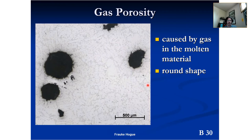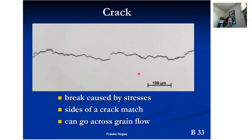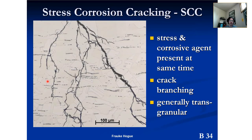Gas porosity: there is gas somehow in the material, typically characterized by a round shape because the gas formed a bubble trying to lower its energy. Shrinkage porosity is a little different — the morphology follows the parent microstructure, or as Hoag describes it better, 'voids at the interdendritic spaces.' This occurs in a casting where there's insufficient molten material. And good old-fashioned cracks — this is an unetched specimen, as-polished. A crack may be one of the few microstructural features you can see in metallography without etching.